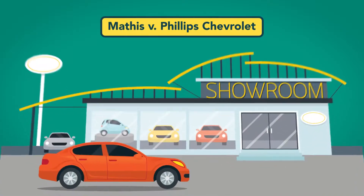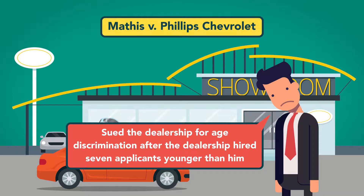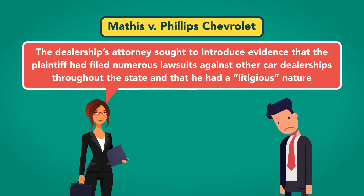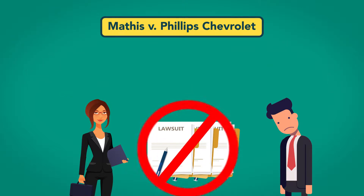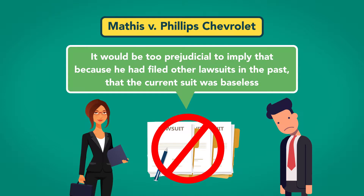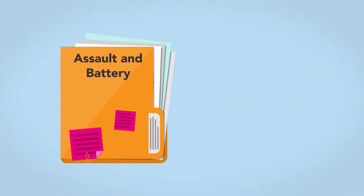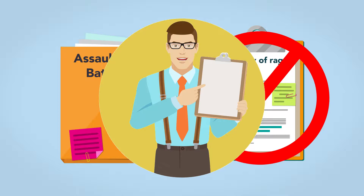In Mathis v. Phillips Chevrolet, the plaintiff unsuccessfully applied for a car salesman position and sued the dealership for age discrimination after the dealership hired seven applicants younger than he was. During the lawsuit, the dealership's attorney sought to introduce evidence that the plaintiff had filed numerous lawsuits against other car dealerships throughout the state and that he had a litigious nature. The court did not permit the introduction of this evidence under Rule 404. It would be too prejudicial to imply that because he had filed other lawsuits in the past, the current lawsuit was baseless. Similarly, in a criminal prosecution for assault and battery, prosecutors may not introduce evidence that the accused has issues with rage and violence to prove that he committed the assault with which he's charged.